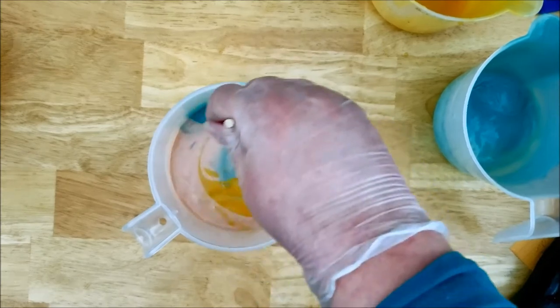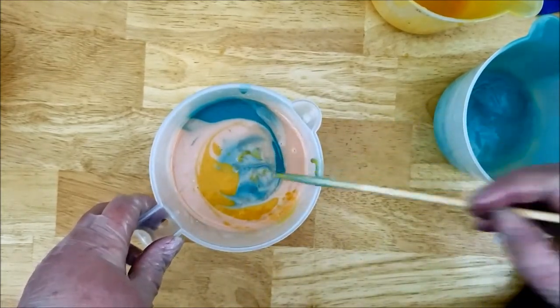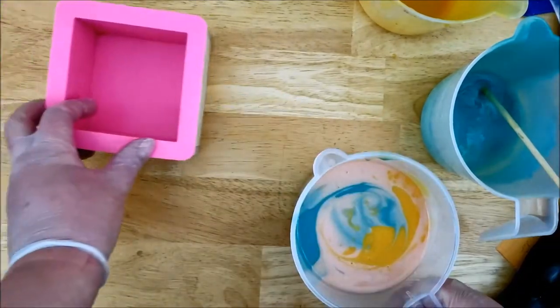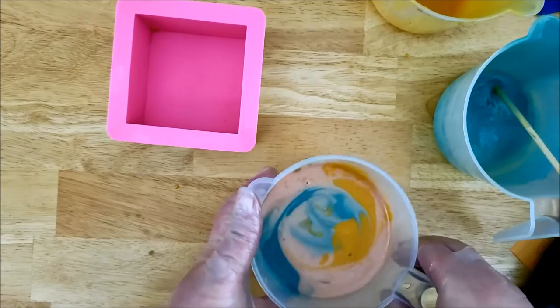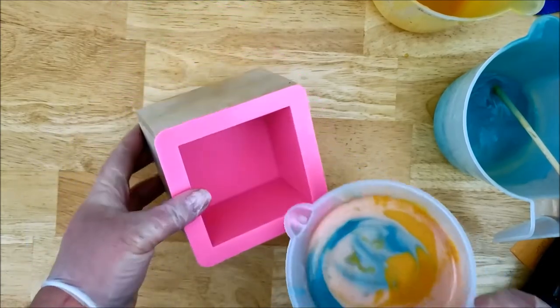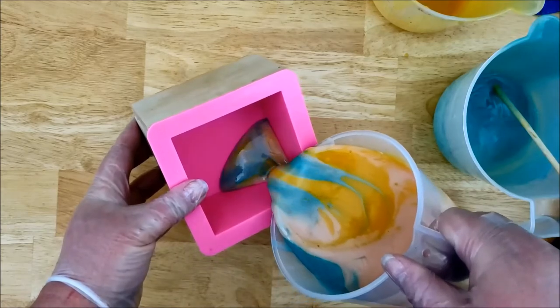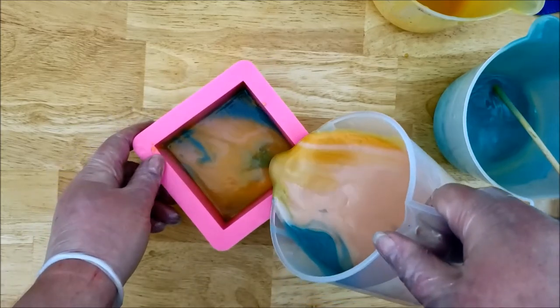So I'm going to do an in-the-pot swirl. I've poured all three colors into one pot and swirled it lightly. And now I'm just going to pour it into the mold after I knock out some of these air bubbles. And I'm going to pour this into the mold from different points to help give it a more unique pattern inside.